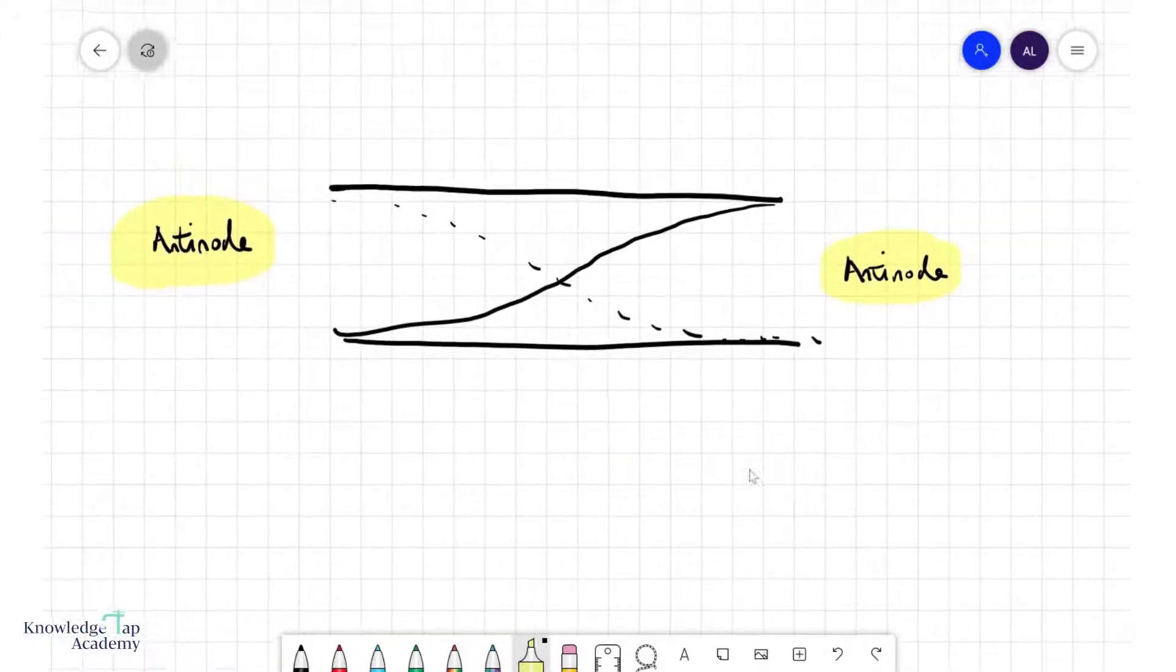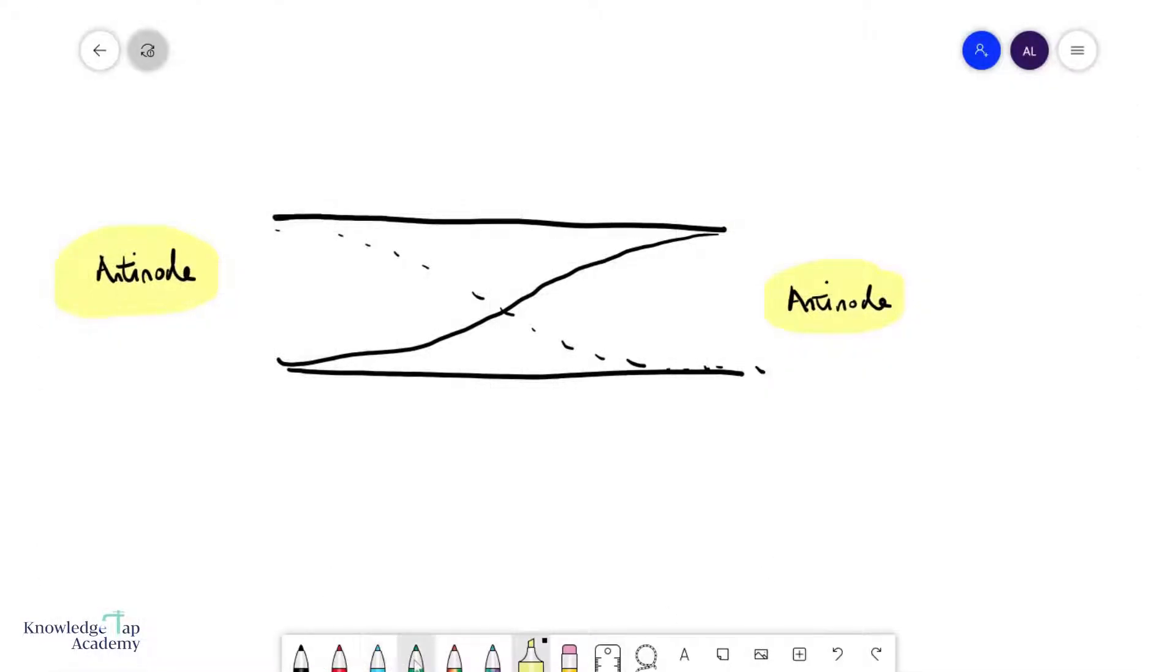Now looking at what we have over here, can we see that if this is the length of the pipe L, then again what you see L equals to exactly half a wavelength, lambda over 2. And so this of course is your fundamental mode of vibration. The frequency will be the lowest, the lowest frequency of wave that will be able to form a stationary wave on this pipe.